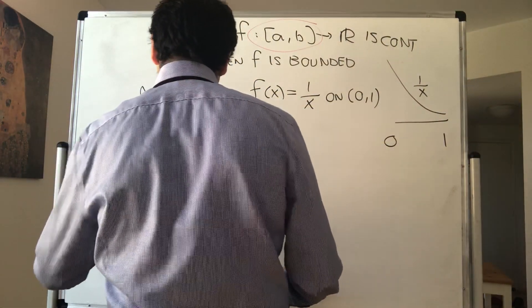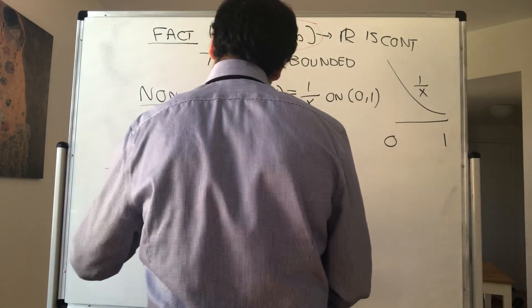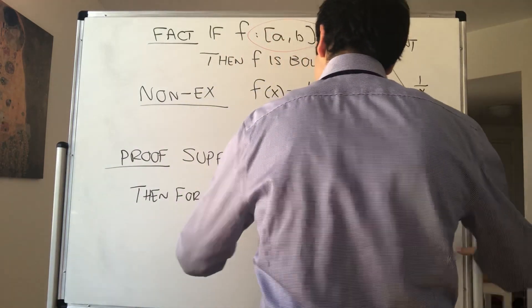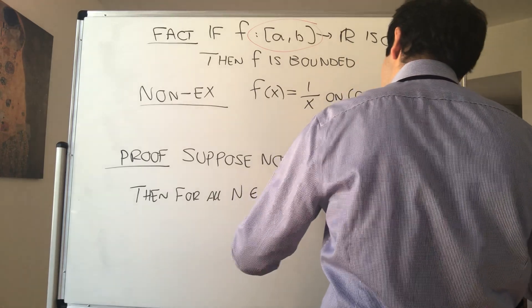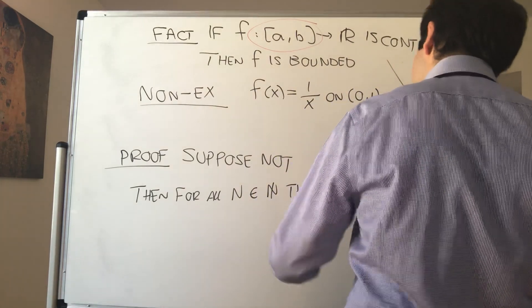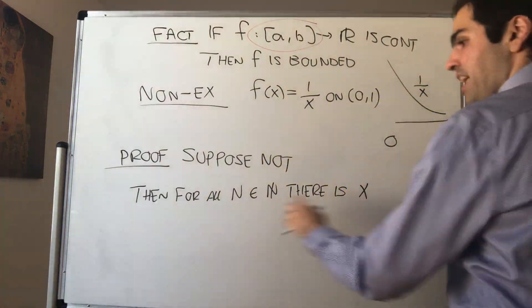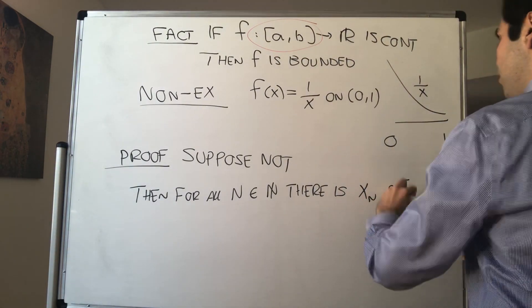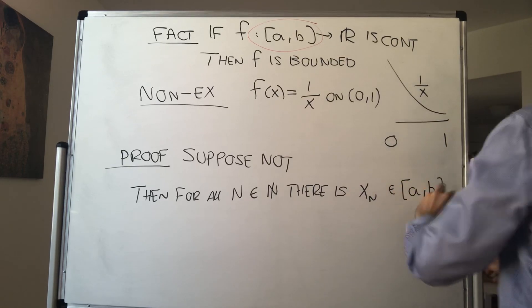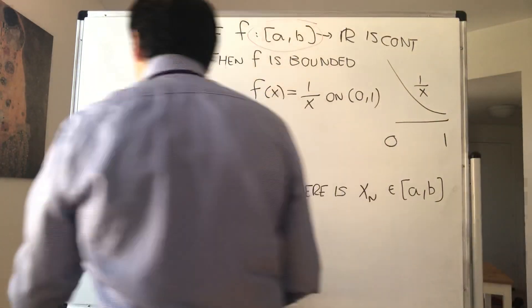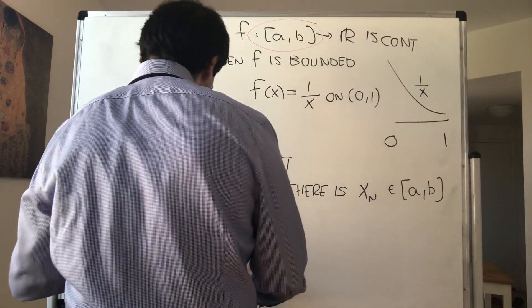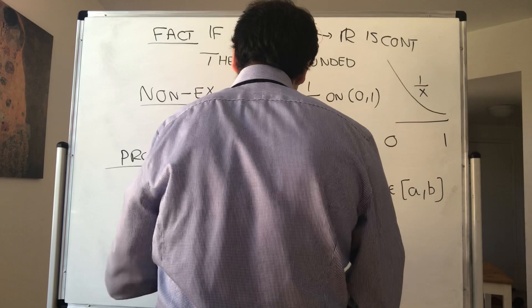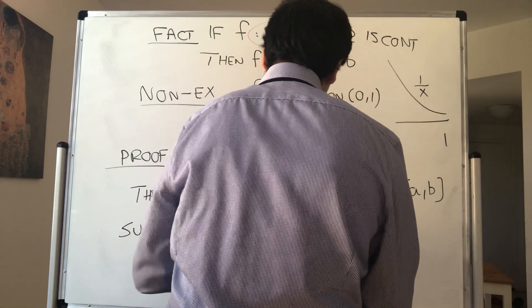So then, for all N, there is some x, but since x depends on this natural number, let's write it xₙ in your closed set [a,b] such that |f(xₙ)| > N.